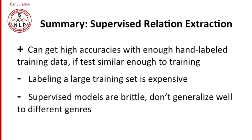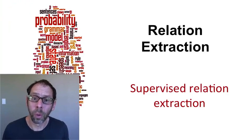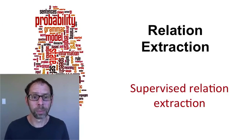In summary, supervised relation extraction lets us get high accuracies if we have enough hand-labeled data and if the test set is in the same domain as the training set. The downsides are the expense of labeling a large training set, and the general problem with supervised models: they don't generalize well to different genres. If we know our system will run on a similar genre to the training data, supervised is a good approach. If the test set may be very different and we need robustness across genres, we'll probably need to turn to unsupervised or semi-supervised methods.